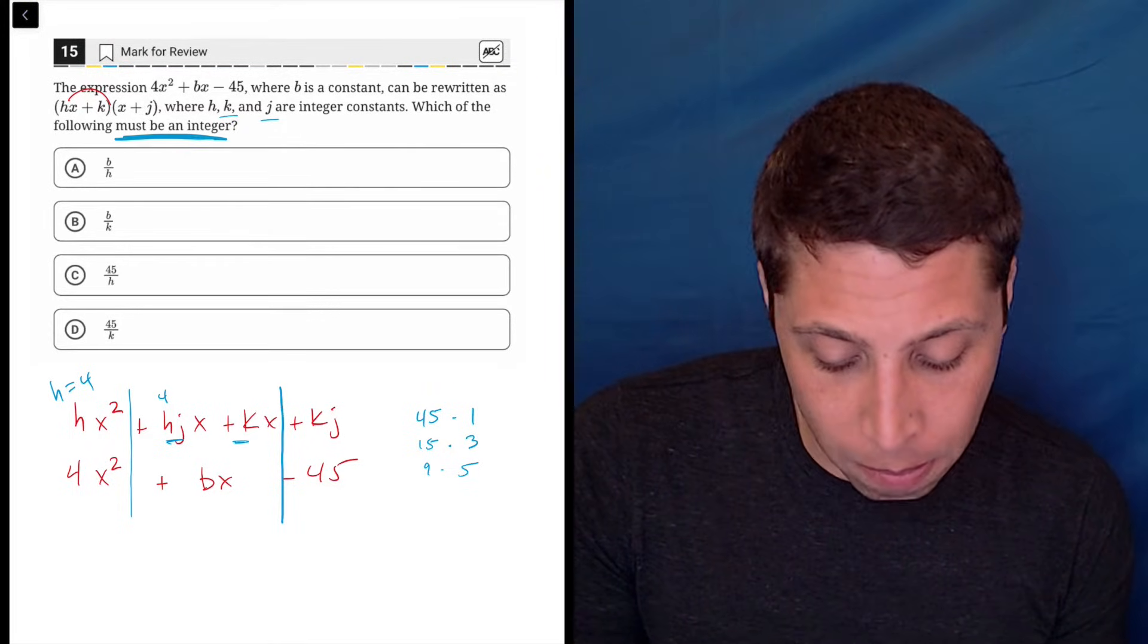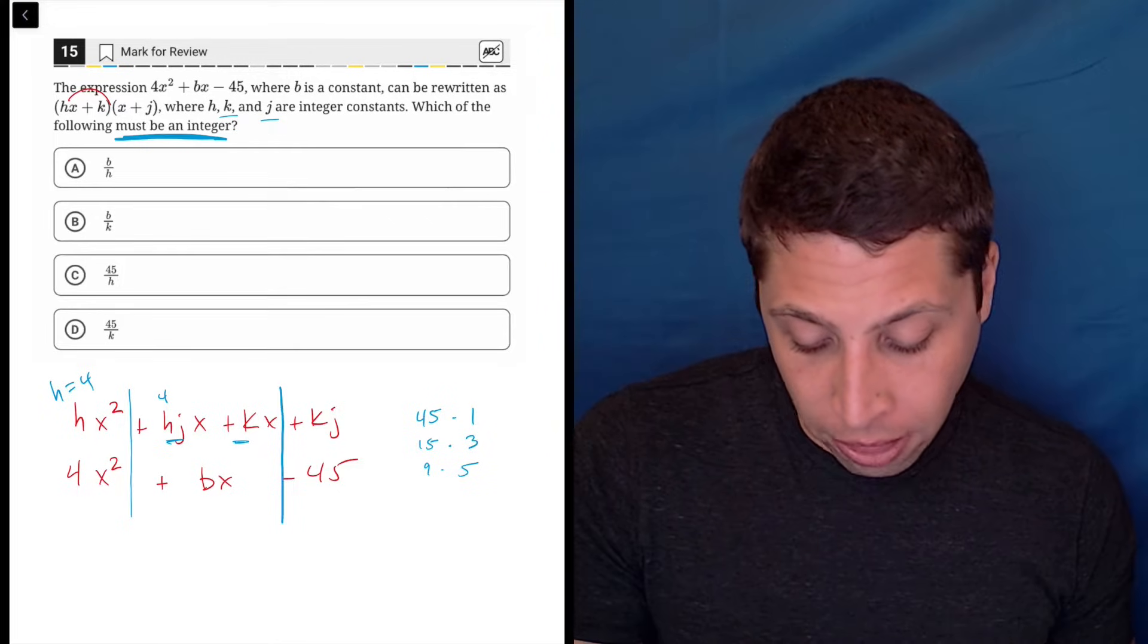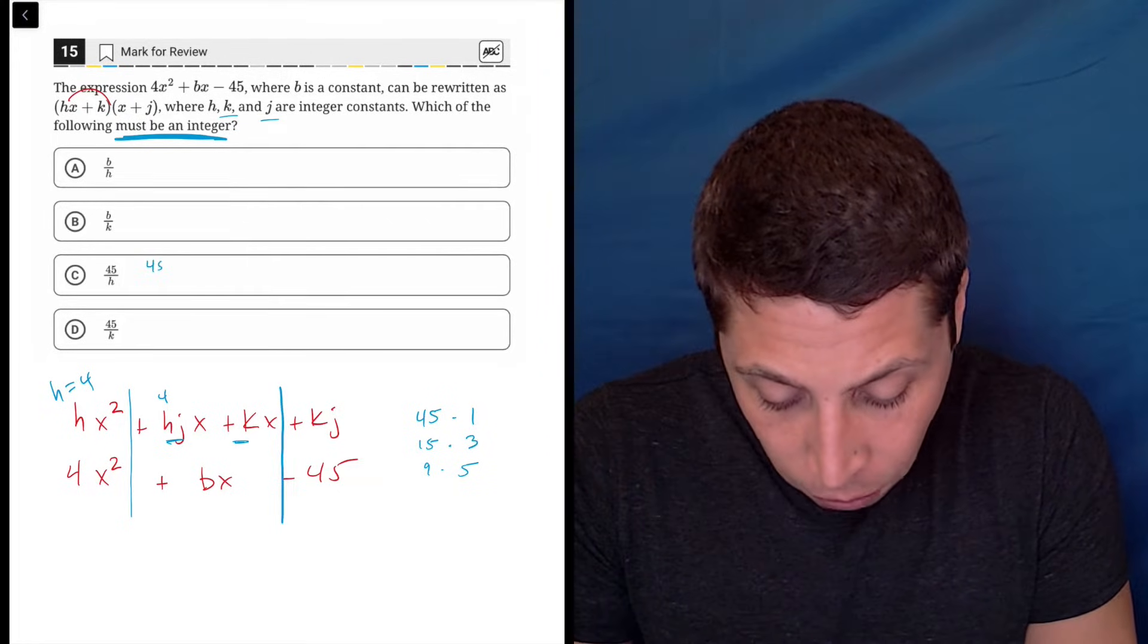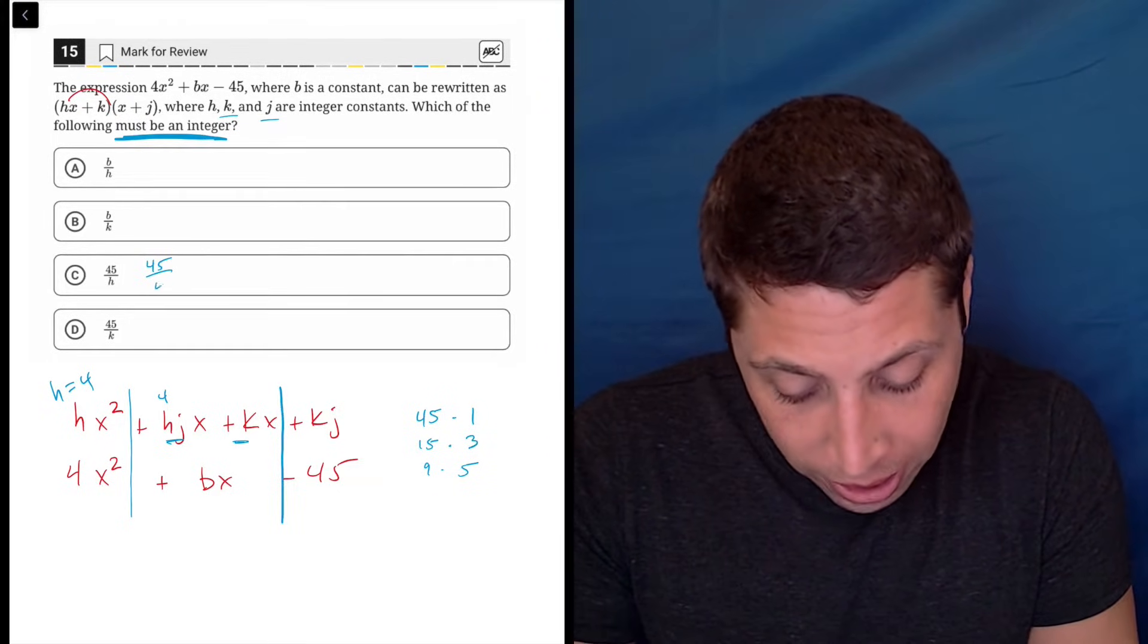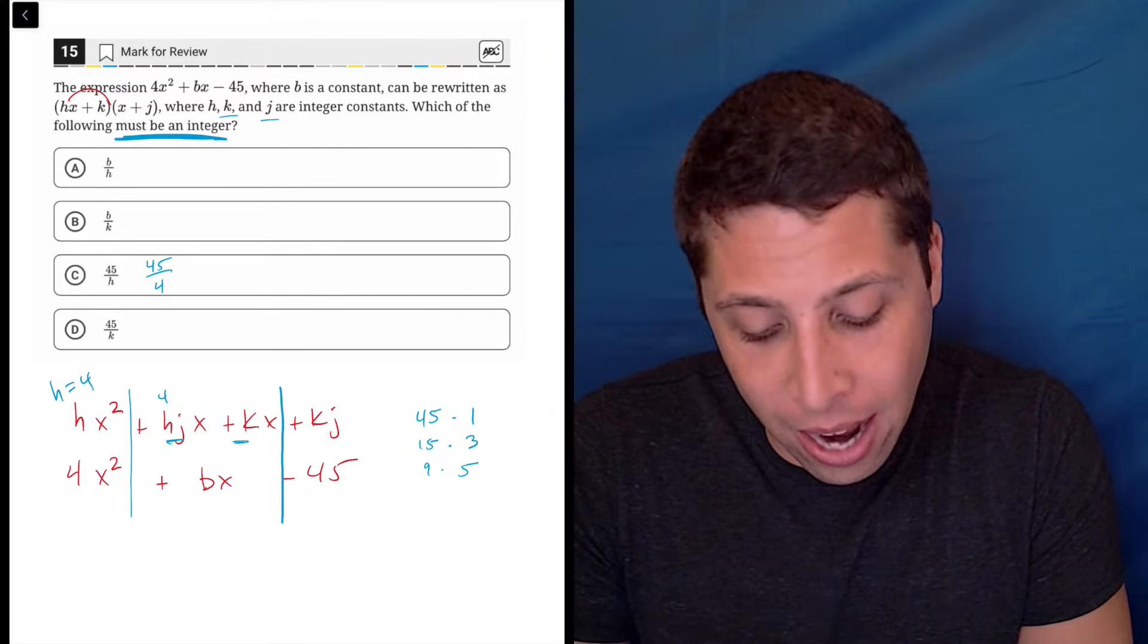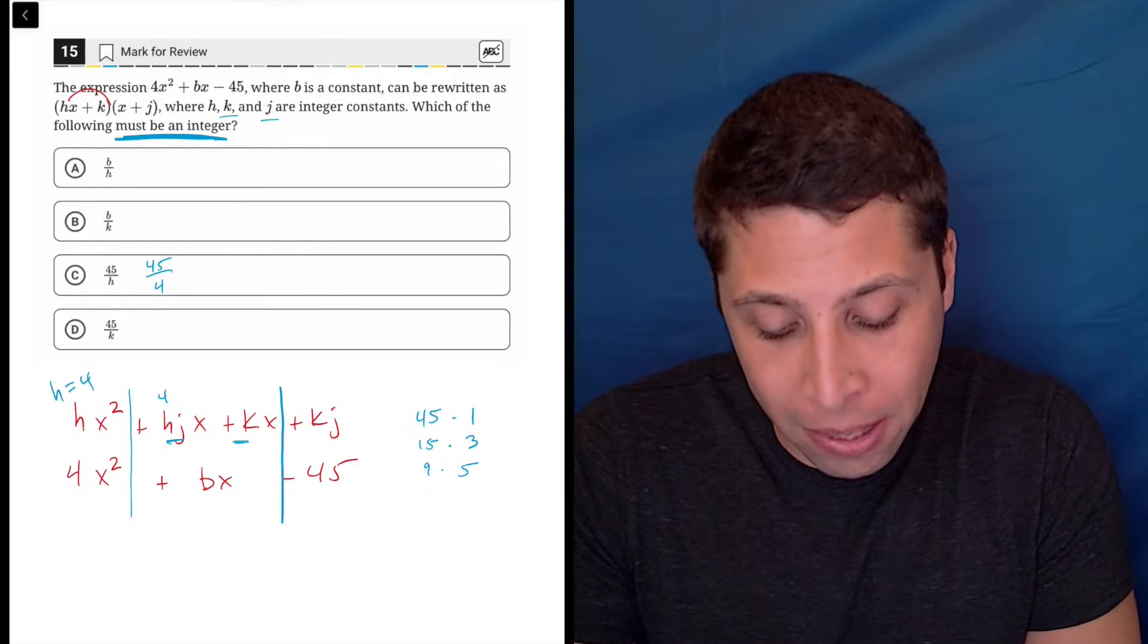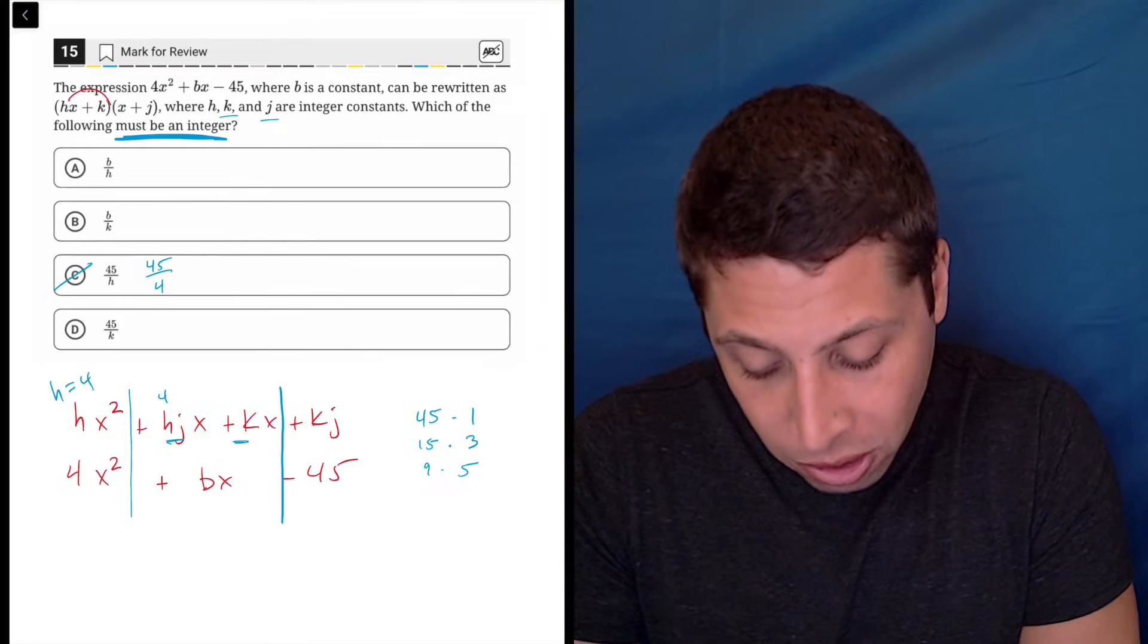We're looking for which of these must be an integer. At the very least, choice C, 45 over—we just said h is 4. We know that that is not an integer, right? That's going to be a decimal because 45 is not divisible by 4. So that gets rid of this.